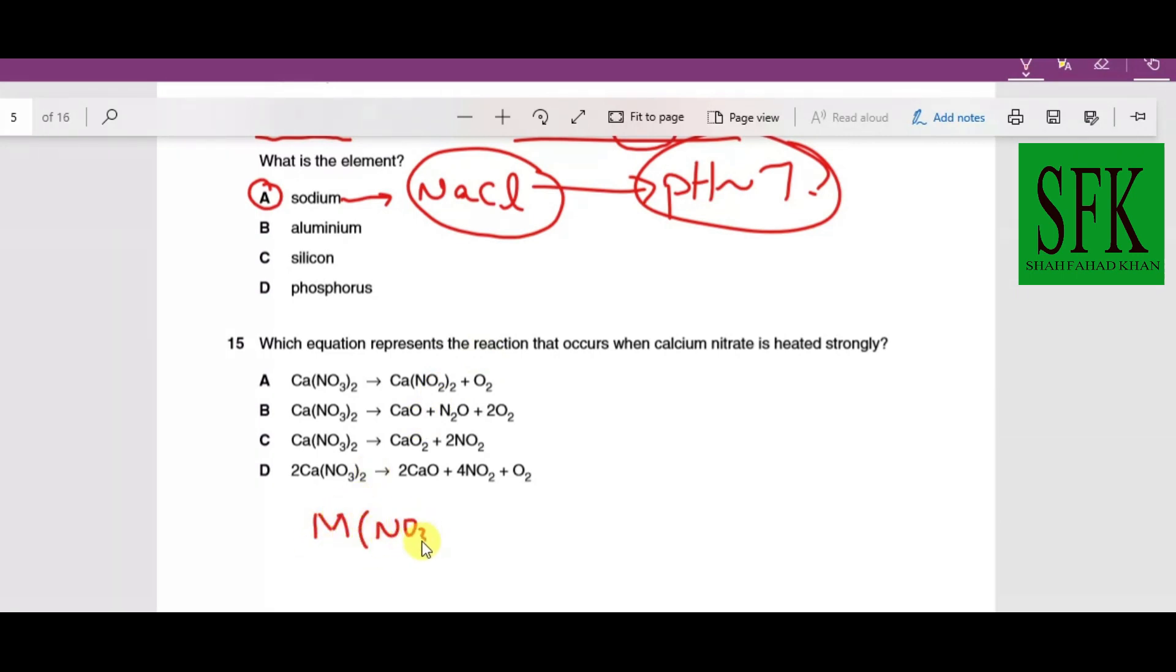This is an equation directly from theory. Whenever group two nitrates are heated they always produce their corresponding oxide, nitrogen dioxide, and oxygen. Two moles of nitrogen dioxide, half a mole of oxygen. If you look at option D, it's the same equation but multiplied by two. Option D is the correct answer.